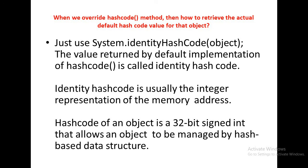The next question is: when we override the hashCode method, how do we retrieve the actual default hash code value for that object? The answer is: use System.identityHashCode passing the object as a parameter. The value returned by the default implementation of hashCode is called the identity hash code. The identity hash code is usually the integer representation of the memory address of the object. The hash code of an object is a 32-bit signed integer that allows an object to be managed by hash-based data structures.